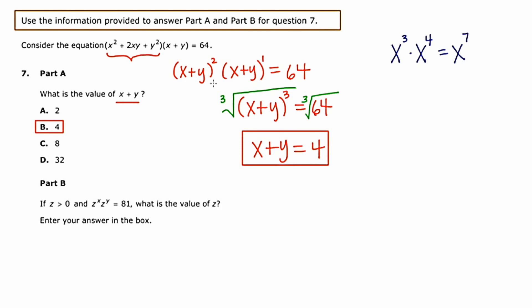Now I'm going to use this answer in doing the second part of the question, which is part B. If z is greater than zero, and z to the x times z to the y is equal to 81, what is the value of z? Well, again, focusing on the left hand side here, this looks a lot like what I just did over here on the upper right in dark blue.